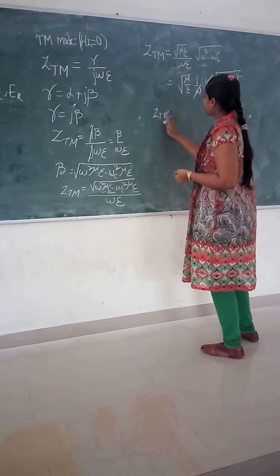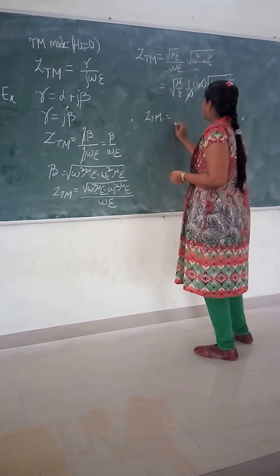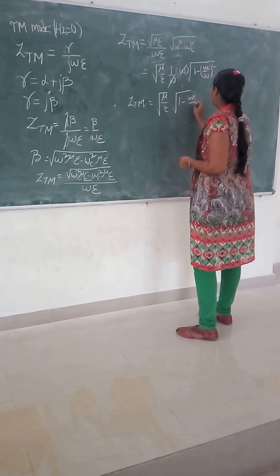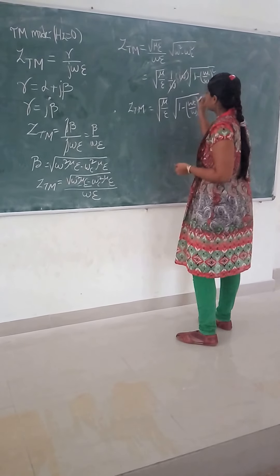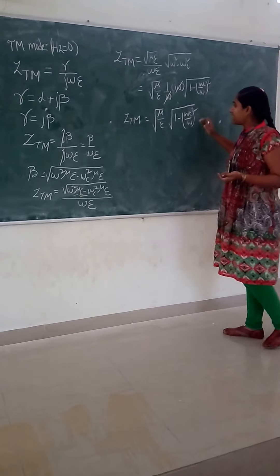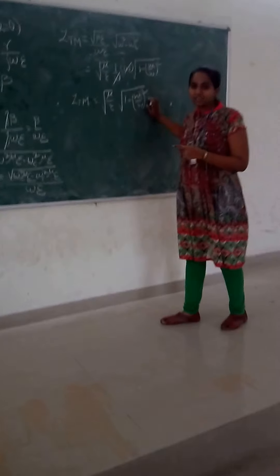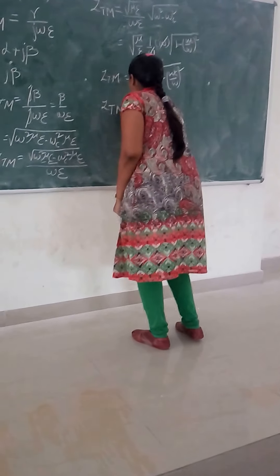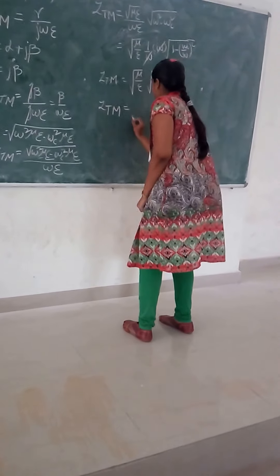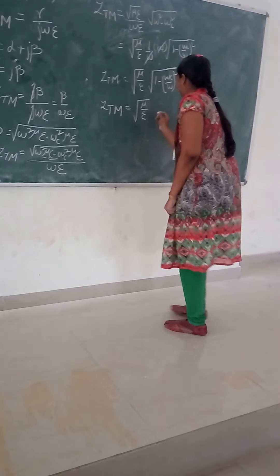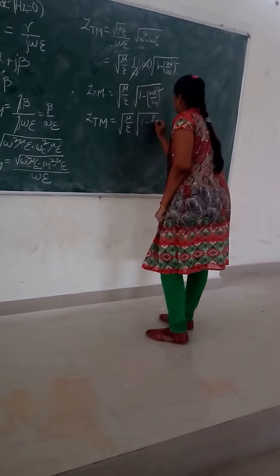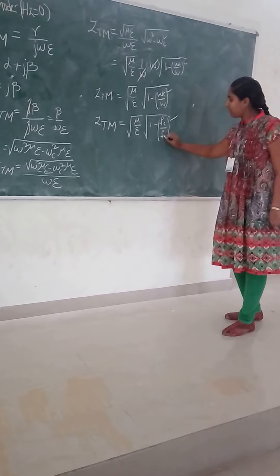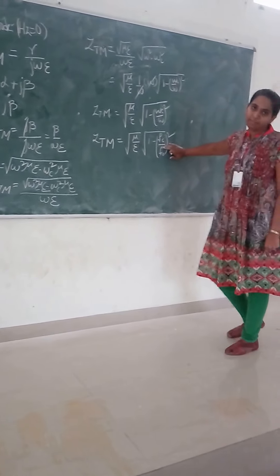Finally we get the wave impedance equation as: under root of mu by epsilon, multiplied by under root of 1 minus (fc divided by f) squared. Where fc is the cutoff frequency and f is the frequency in the free space.